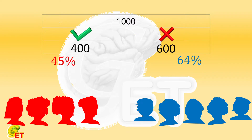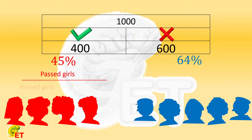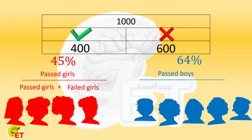For girls, their average pass rate is: passed girls divided by passed girls plus failed girls. For boys, it is passed boys divided by passed boys plus failed boys. The rest of the computation is quite easy.